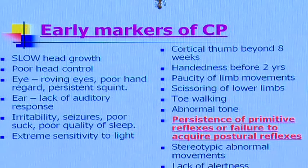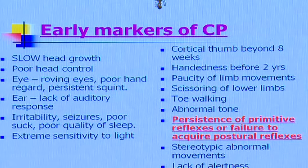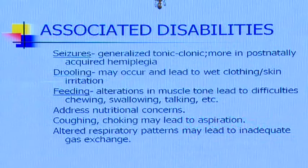On the right-hand side of the slide you can see certain signs we look for: handedness before the age of two years, paucity of limb movements, toe walking, abnormal tone, or persistence of primitive reflexes beyond the time they should disappear. All of these give rise to the thought that this child may be developing cerebral palsy.